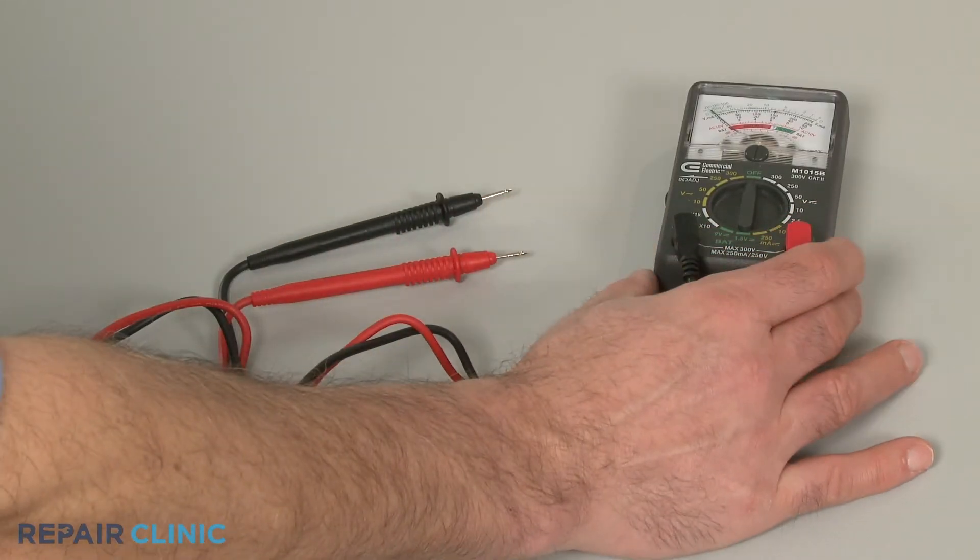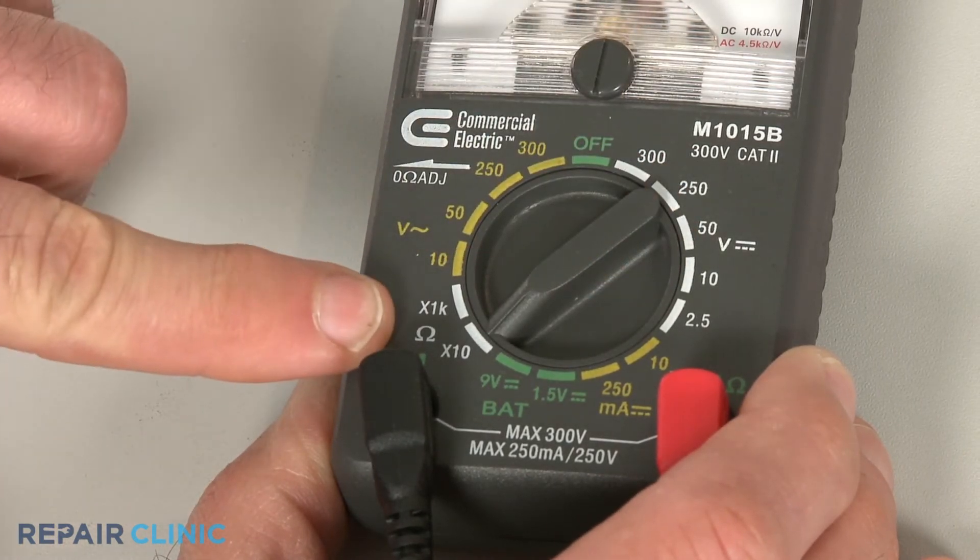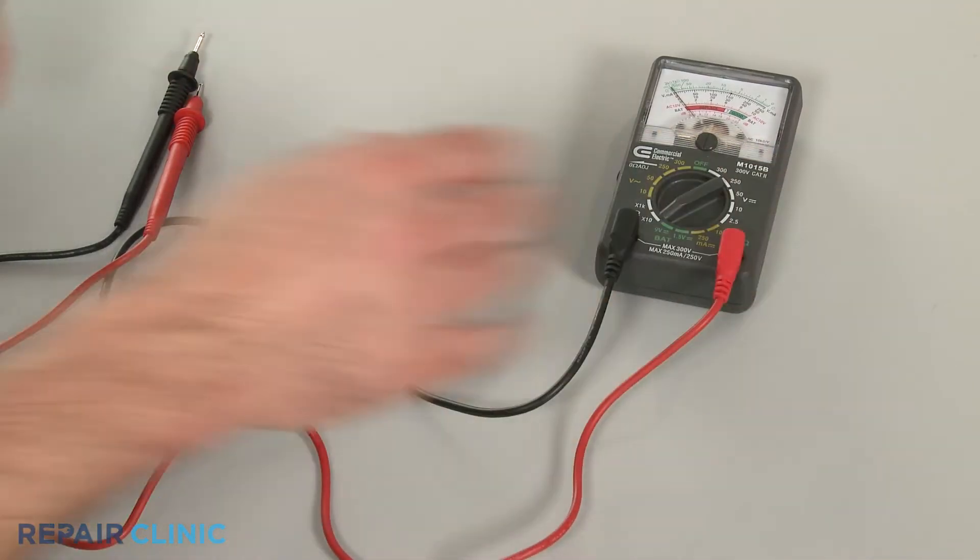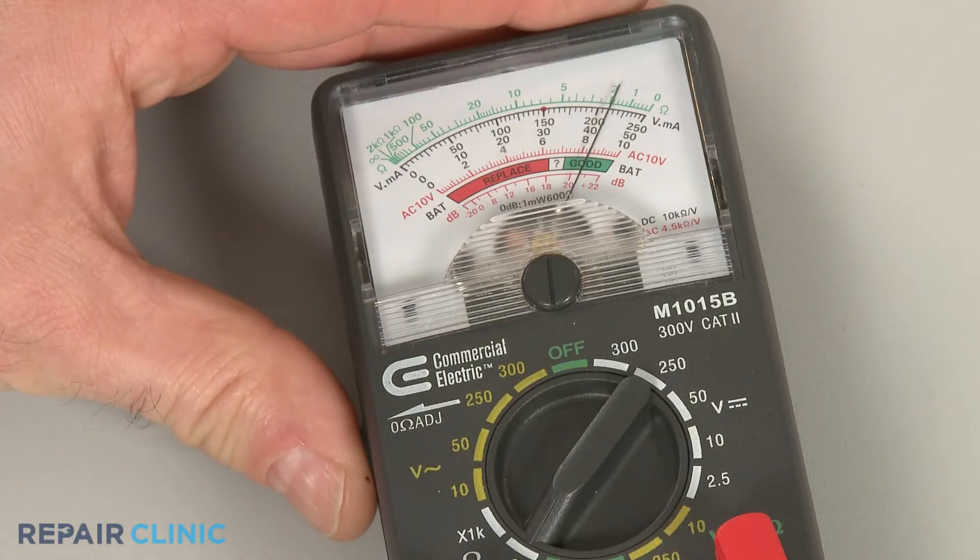When using an analog model, first rotate the range selection dial to the lowest setting for ohms of resistance. Then calibrate the meter by pinching the probes together while adjusting the needle to read zero.